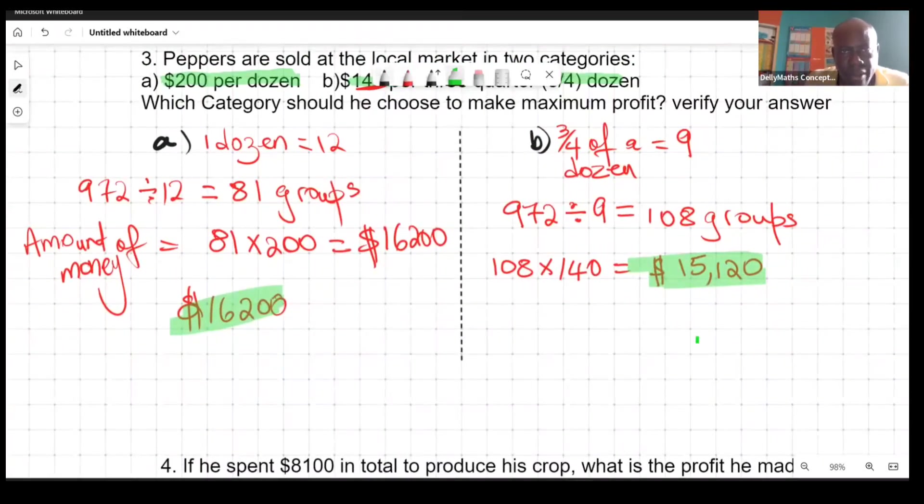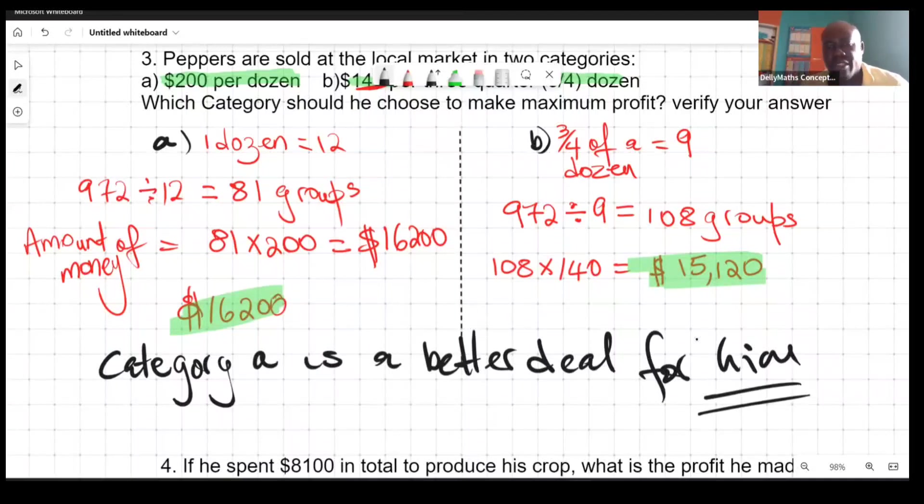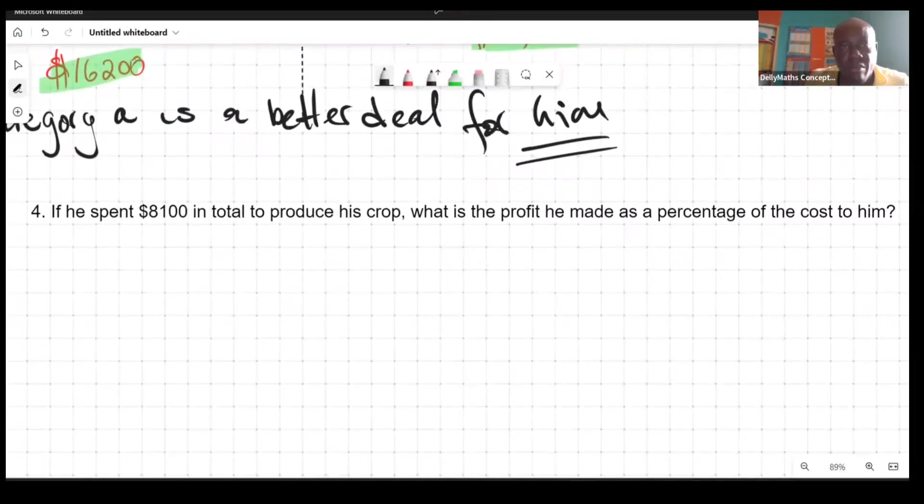Category A is a better deal for him. If he sells under the condition of category A, he's going to be making more money. The last question says if he spent...